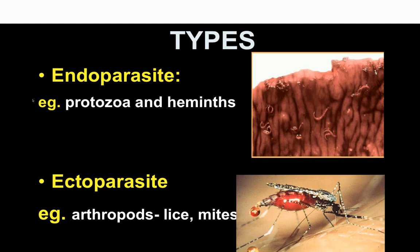Then there are the types of parasites. Some parasites are endoparasites and others are ectoparasites. Endoparasites are the ones which live within the body of the host, like protozoa and helminths — they are present inside the intestines. Ectoparasites are present on the surface of the host's body, examples of which are lice and mites.